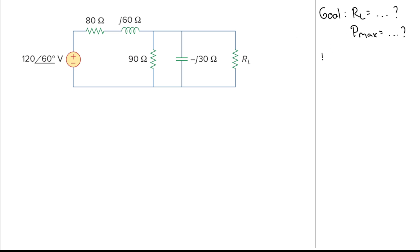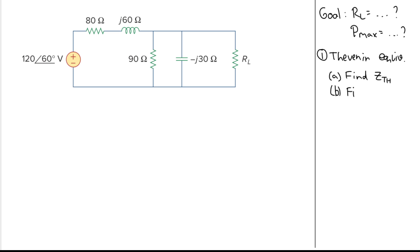The first thing we need to do is find the Thevenin equivalent circuit. To find the Thevenin equivalent we need two things: the first one is the Thevenin impedance, or Zth, and the second one is the Thevenin voltage, Vth.